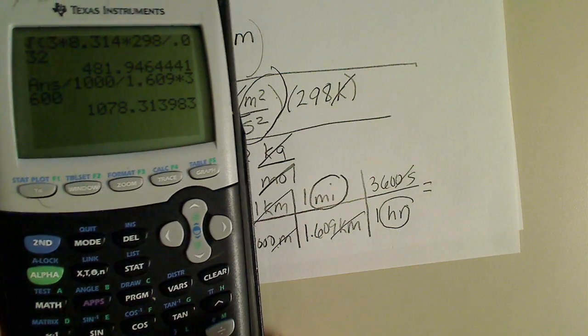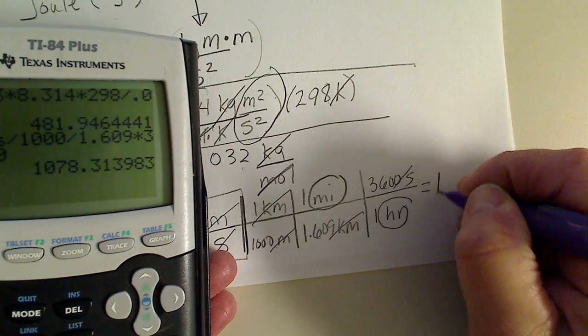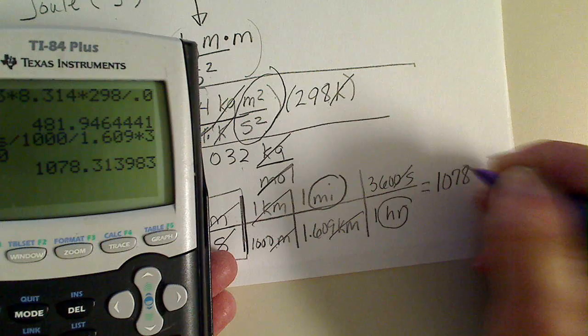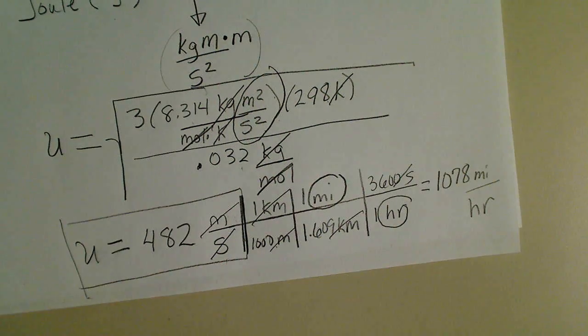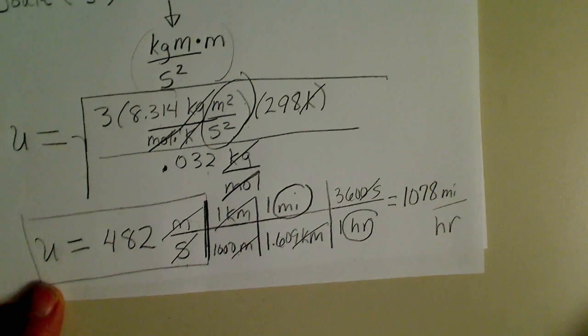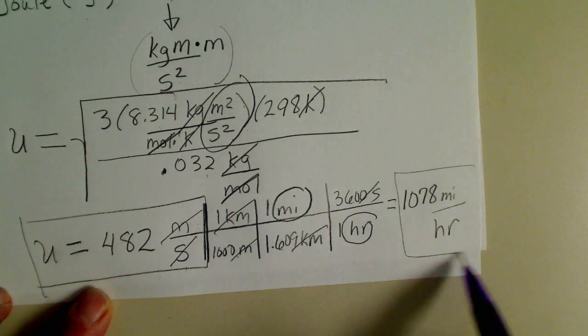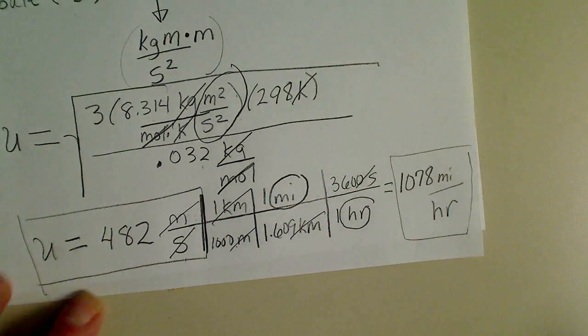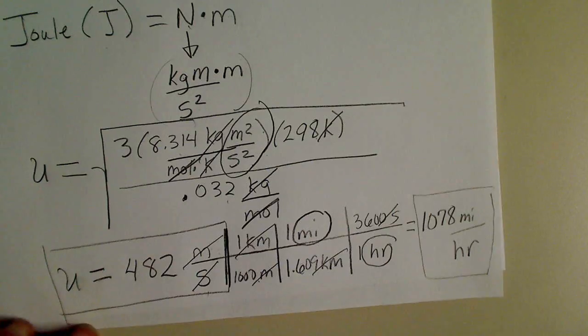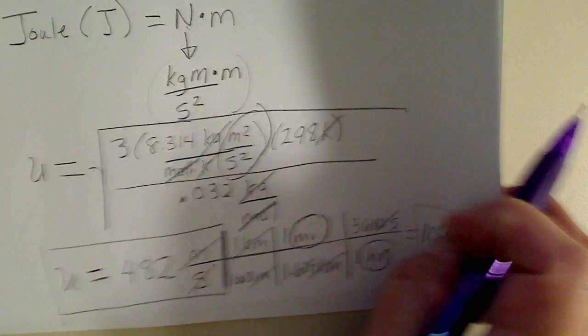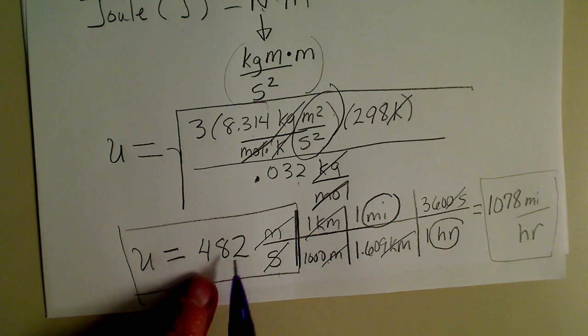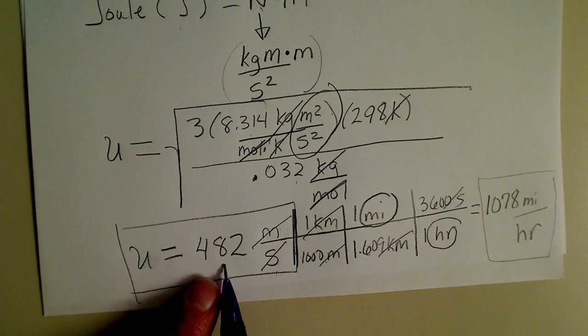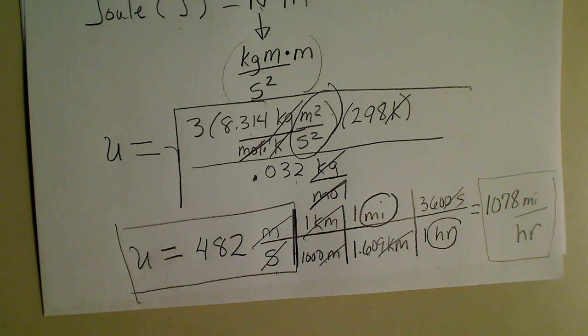1,078. So that sounds a lot faster. 1,078 miles per hour. So on average, a gas at room temperature is traveling at about 1,000 miles per hour. Most likely and definitely for my students, the speed will be left in meters per second.